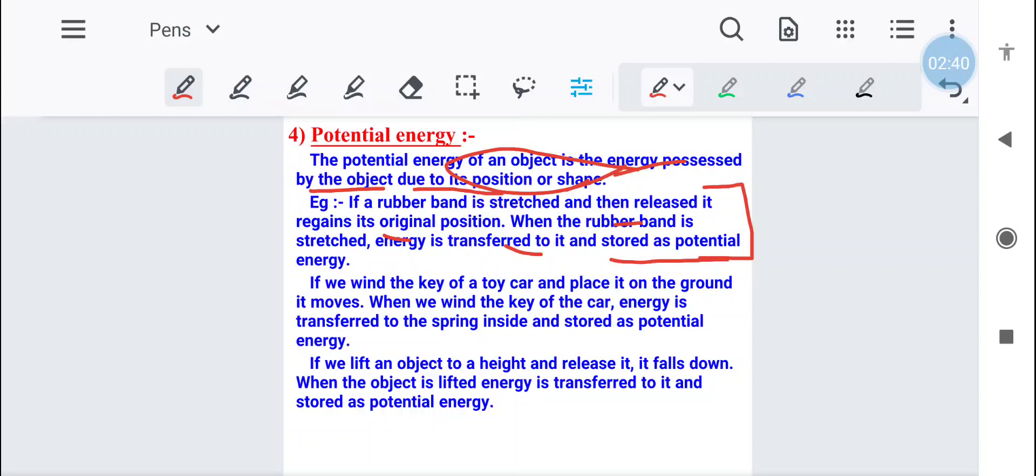This is one example. The second example is the small toy cars at your homes. You put a key in them, wind the key, and after some time when you place it on the ground, that particular toy car starts moving. So what happens is when we are winding the car key, putting the key in it, at that point of time the energy that is transferred into the spring, into the key, that energy is stored in the form of potential energy.